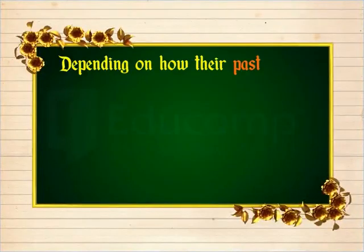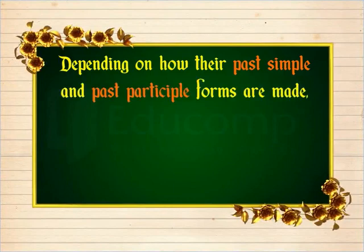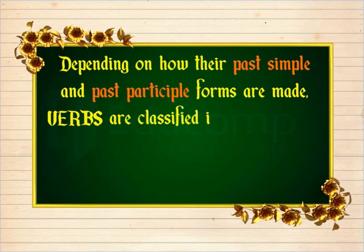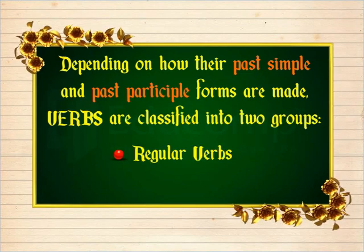Depending on how their past simple and past participle forms are made, verbs are classified into two groups: regular verbs and irregular verbs.